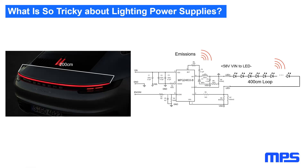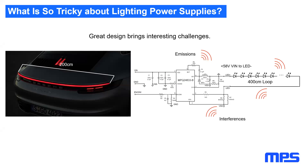When talking about EMC there are two things that concern us. First is electromagnetic emissions — the noise our device emits to the environment. There are two main sources: the power loop, which consists of the input capacitors, the switches inside the IC, and the power inductor; and the load, where any AC current flowing through a very long wire will emit EMI to the exterior. The second concern is interference immunity — we need to make sure our device can survive any noise injected into it up to a certain level to ensure compatibility in the car.